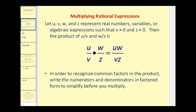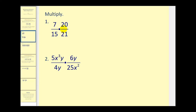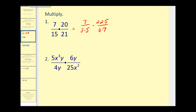Let's try this using two fractions. We're going to write each of these in prime factored form. Seven is prime, 15 would be three times five, 20 is four times five and four is two times two, so we have two times two times five. 21 is three times seven. We know that if we have a common factor between any numerator and any denominator, it simplifies to one. So here we have a seven over seven, that would equal one. And then a five over a five, that would equal one. There are no additional common factors, so the product will be in simplified form.